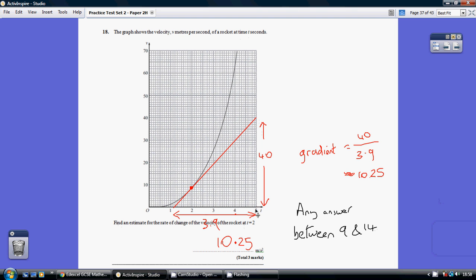So for me that's a height of 40. 0 to 40. And a base of this triangle here from 5 down to about 1.1 to 3.9. So it would be 3.9. So my gradient is 40 divided by 3.9. So about 10.25.